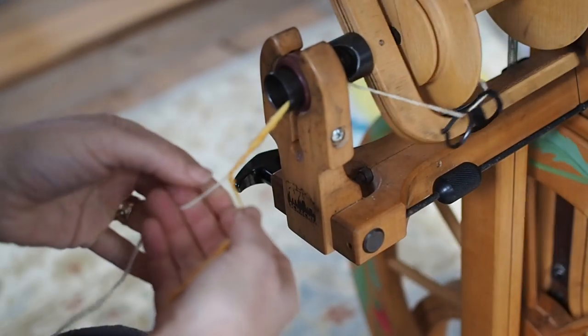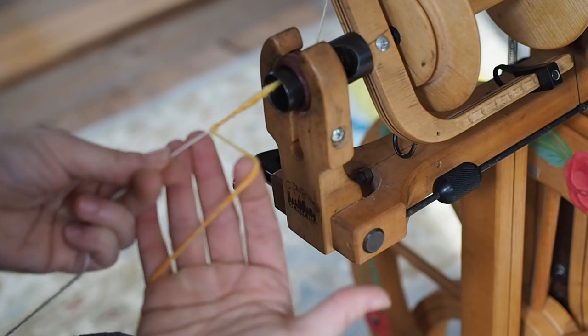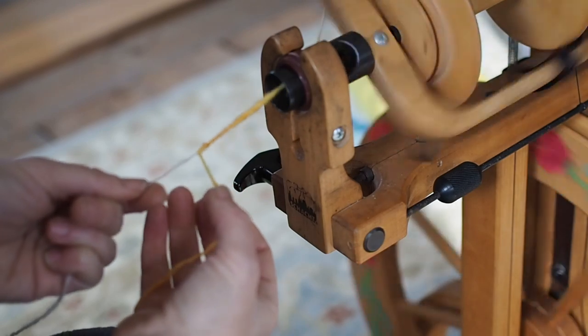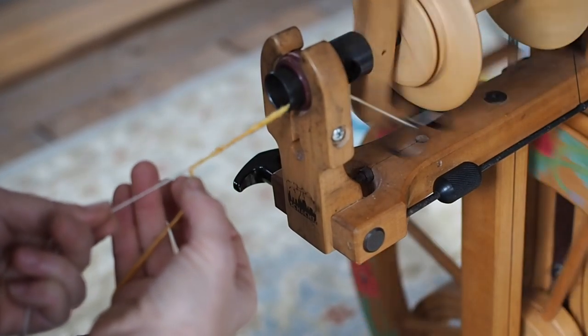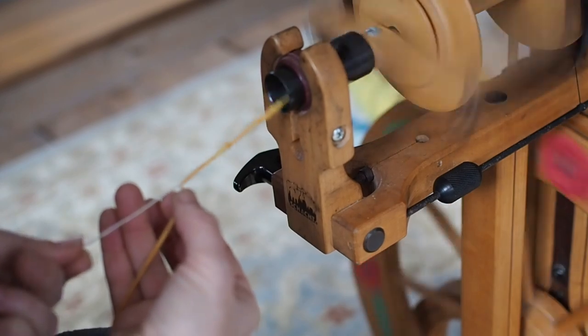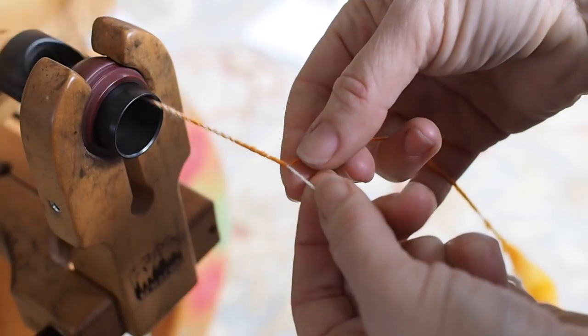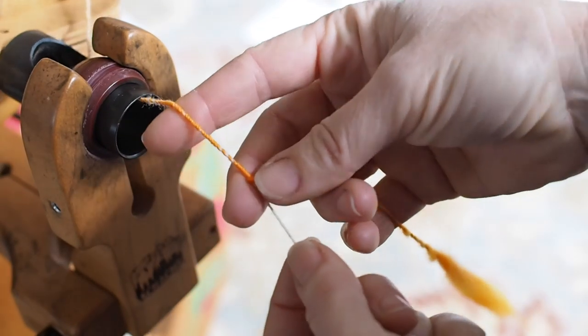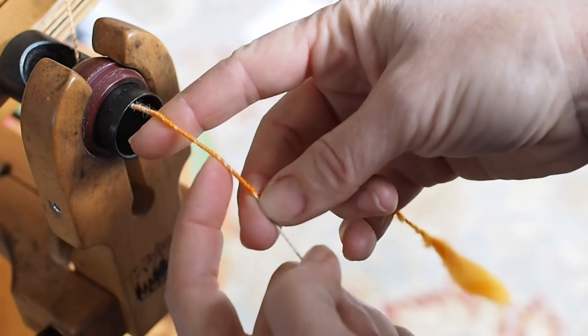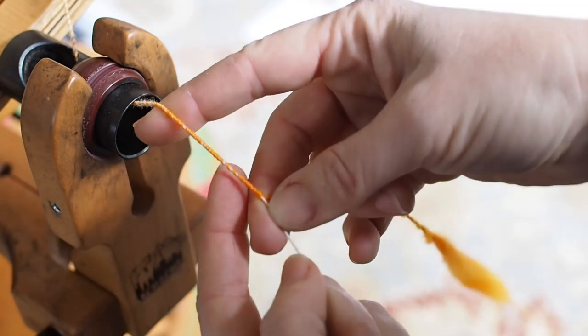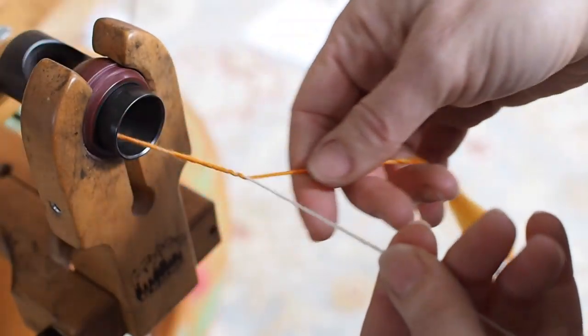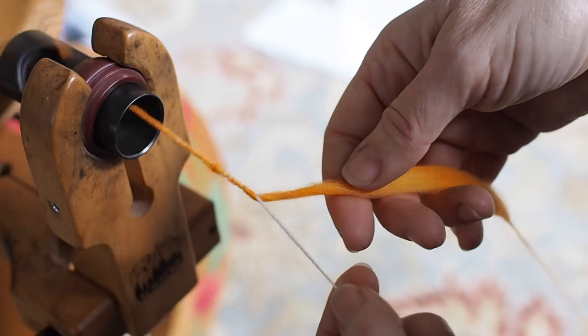I'm going to get it started just by getting my wheel going and letting this curl on top of it. You see how it's already curling up and just let it get going. And then I will guide my yarn on top of the core, placing it so that it coils up right on top of it.